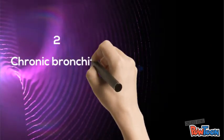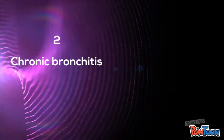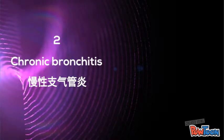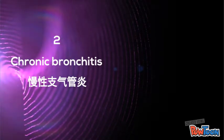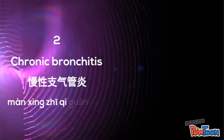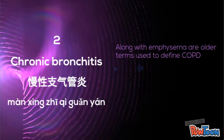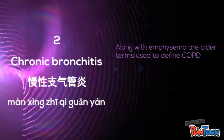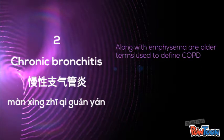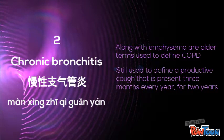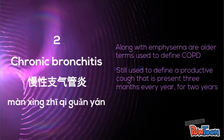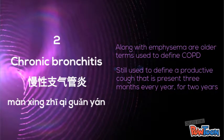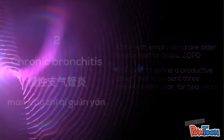Chronic Bronchitis — Màn xin zhi qi guan yán. Chronic bronchitis, along with emphysema, are older terms used for different types of COPD. It is still used to define a productive cough that is present for at least 3 months each year for 2 years.